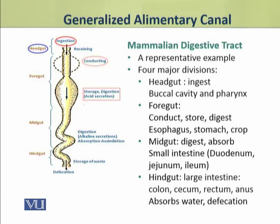The third major division of the mammalian digestive tract is the mid-gut, which corresponds to the small intestine. The small intestine has components: duodenum, jejunum, and ileum. The major function of the mid-gut is to complete the digestion of food and to absorb the products of digestion.